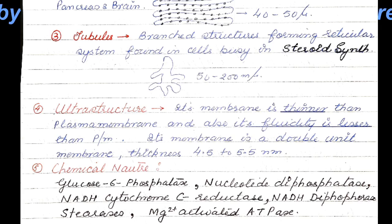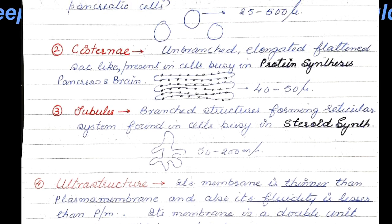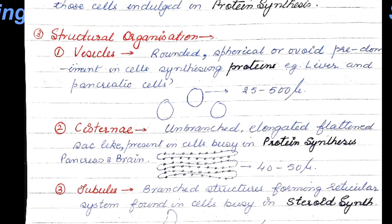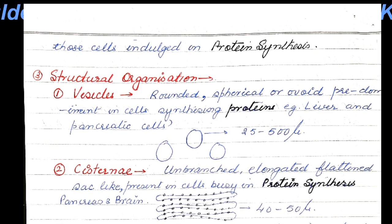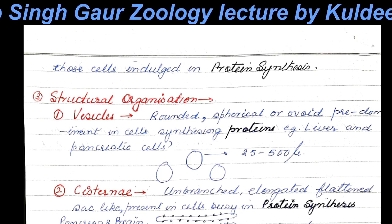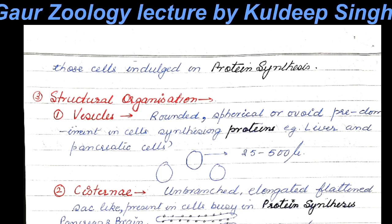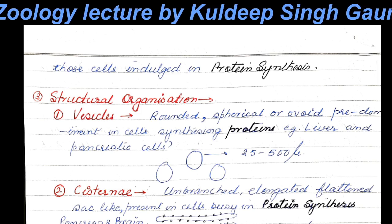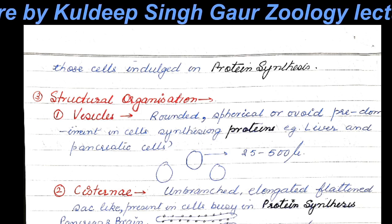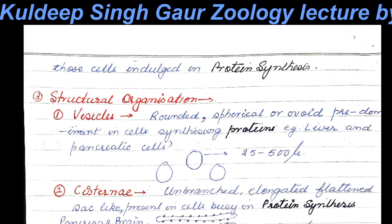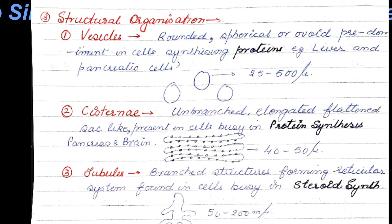Another kind of endoplasmic reticulum is called rough endoplasmic reticulum. It has a rough appearance because of countless ribosomes that remain attached to the membrane outside the endoplasmic reticulum. Rough ER is involved in protein synthesis because ribosomes synthesize proteins.